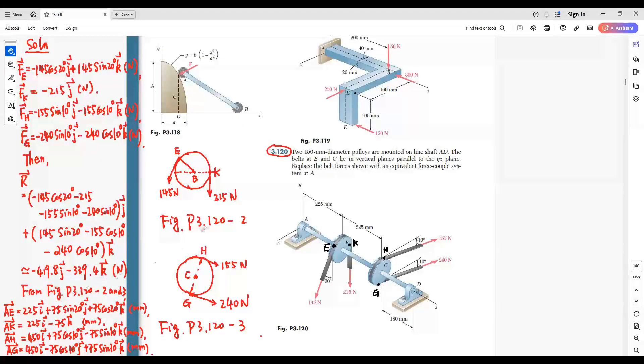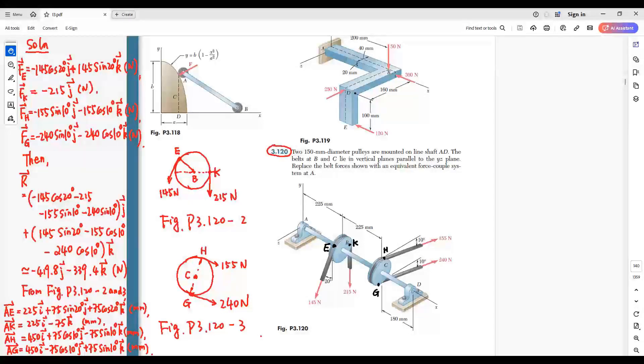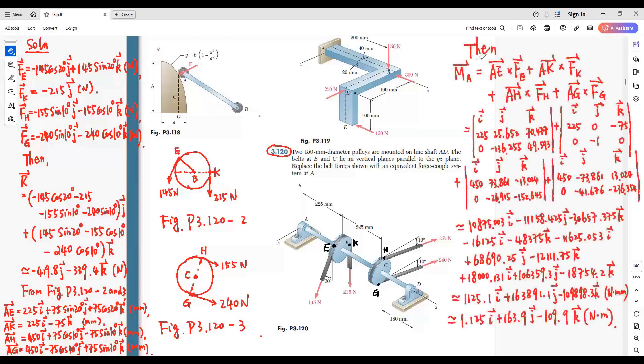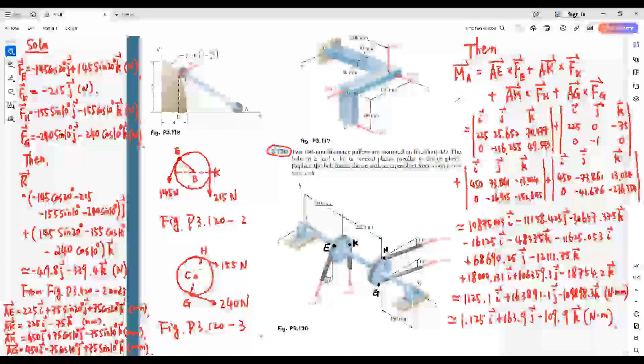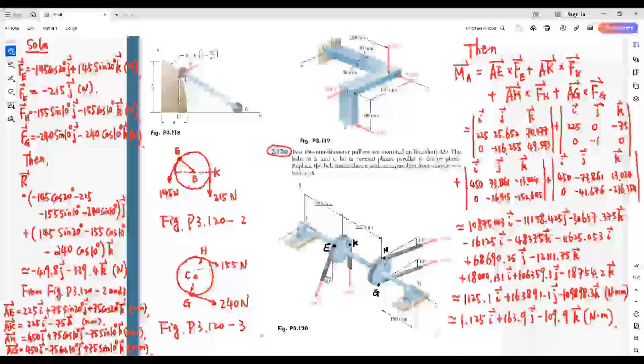From the figure G 3.120-2 and 3, we get the vectors AE, AK, AH, and AG. Then we have the moment about A given by this vector.